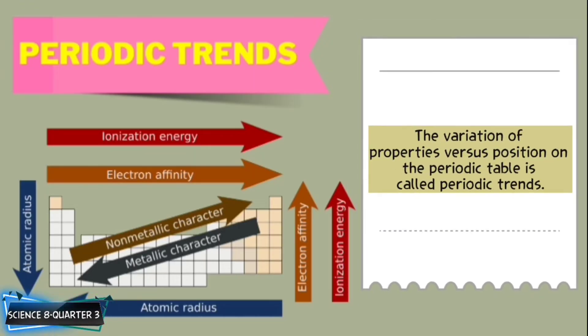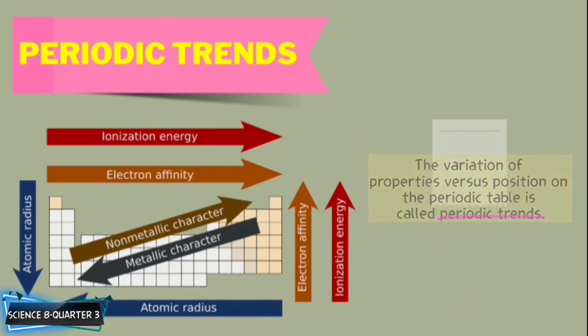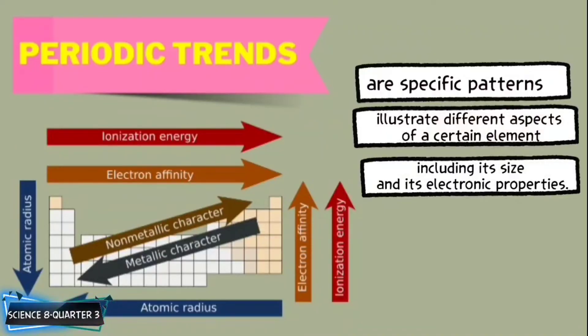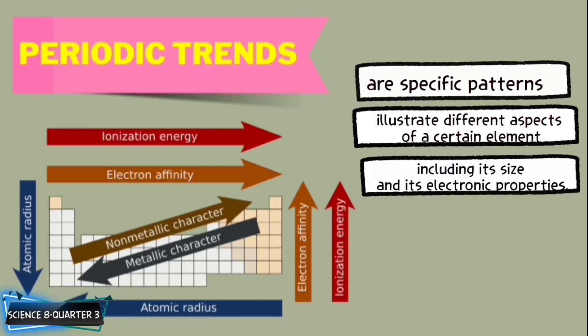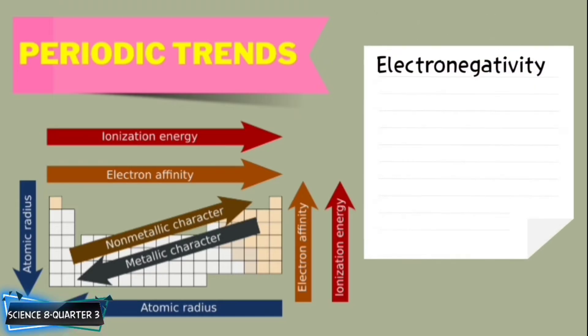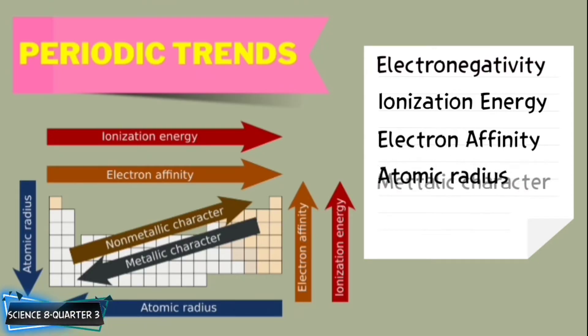Our last topic is the trends in the periodic table. The variation of properties versus position on the periodic table is called periodic trends. Periodic trends are specific patterns that are present in the periodic table that illustrate different aspects of a certain element, including its size and its electronic properties. Major periodic trends include electronegativity, ionization energy, electron affinity, atomic radius and metallic character.